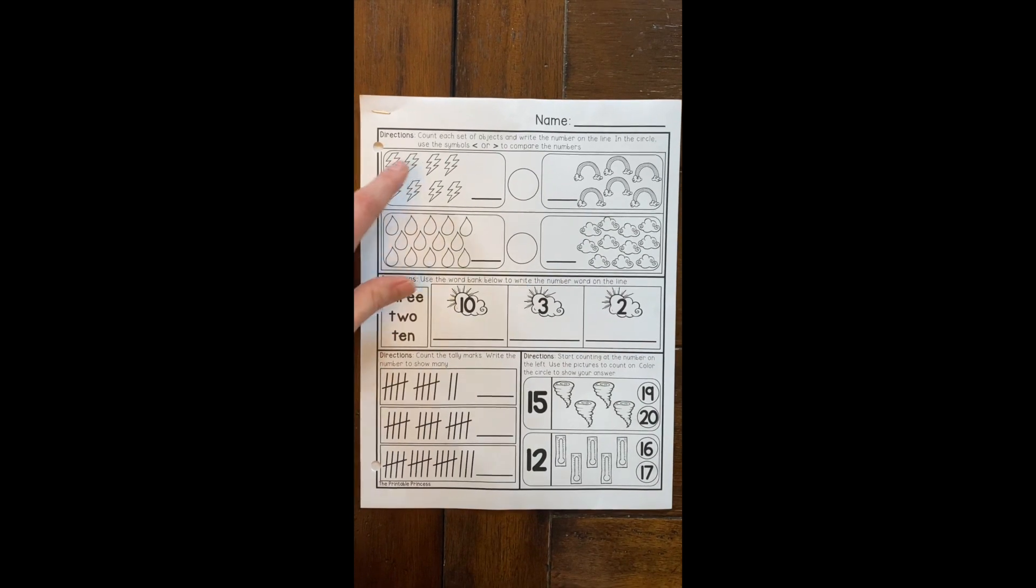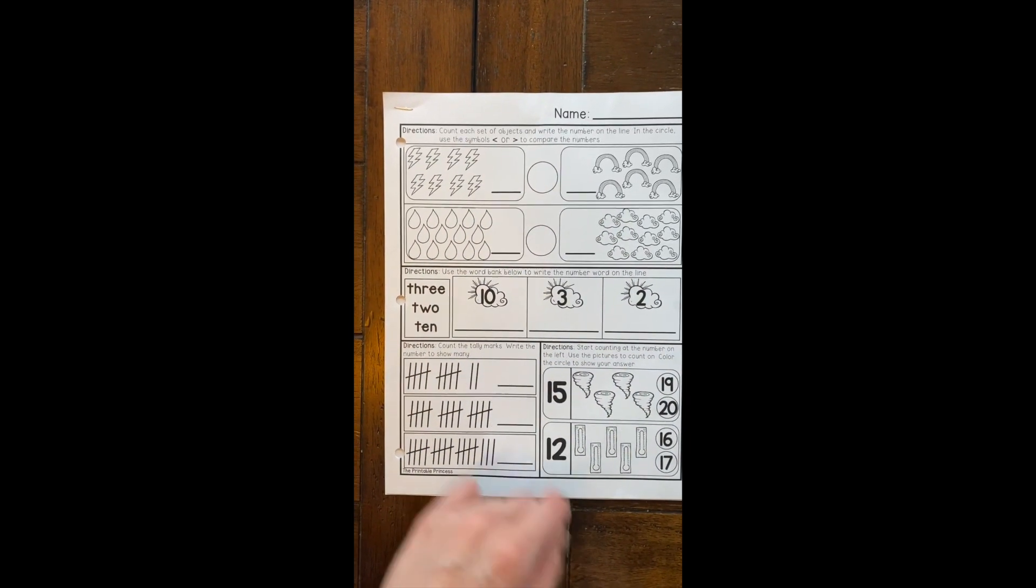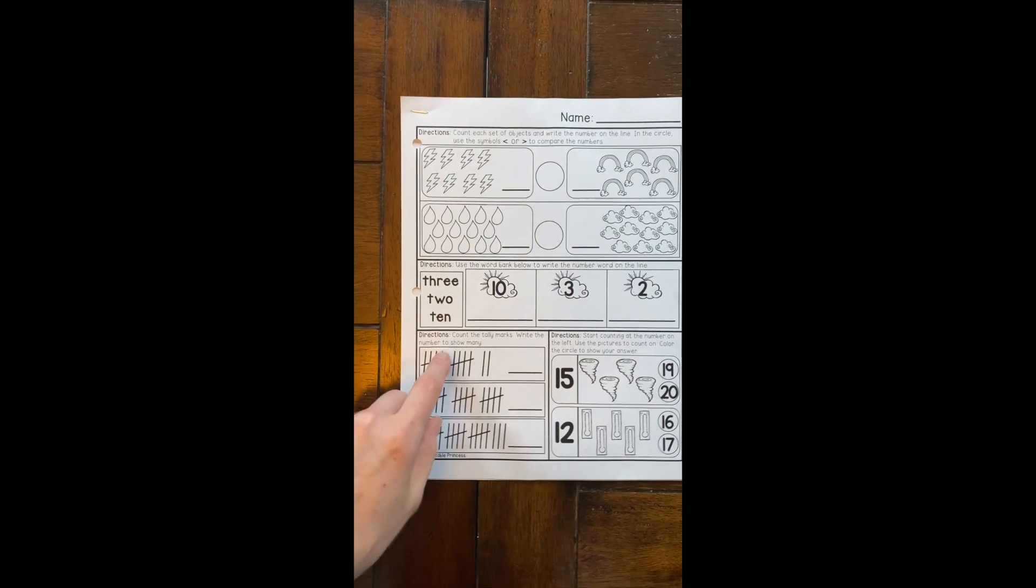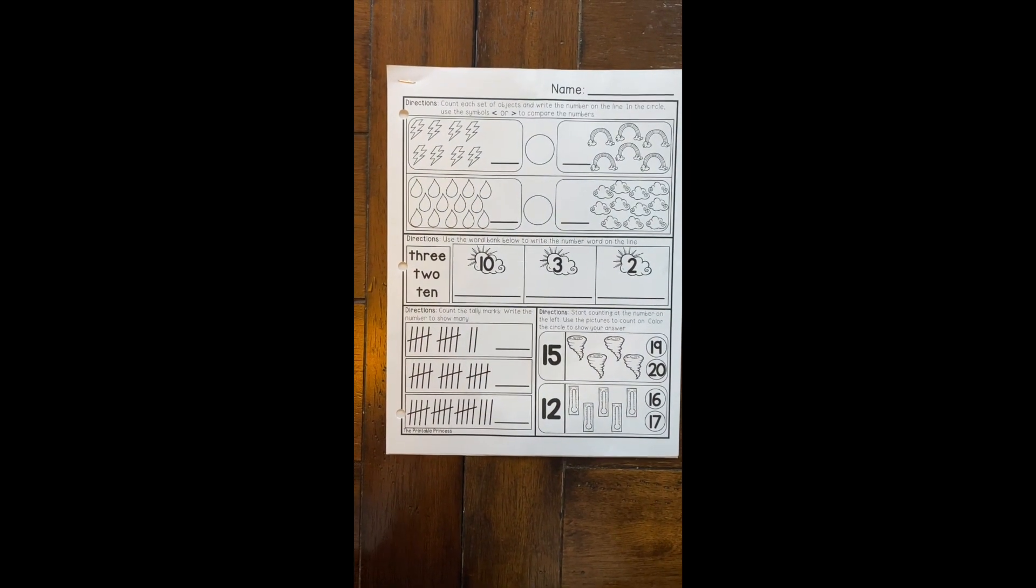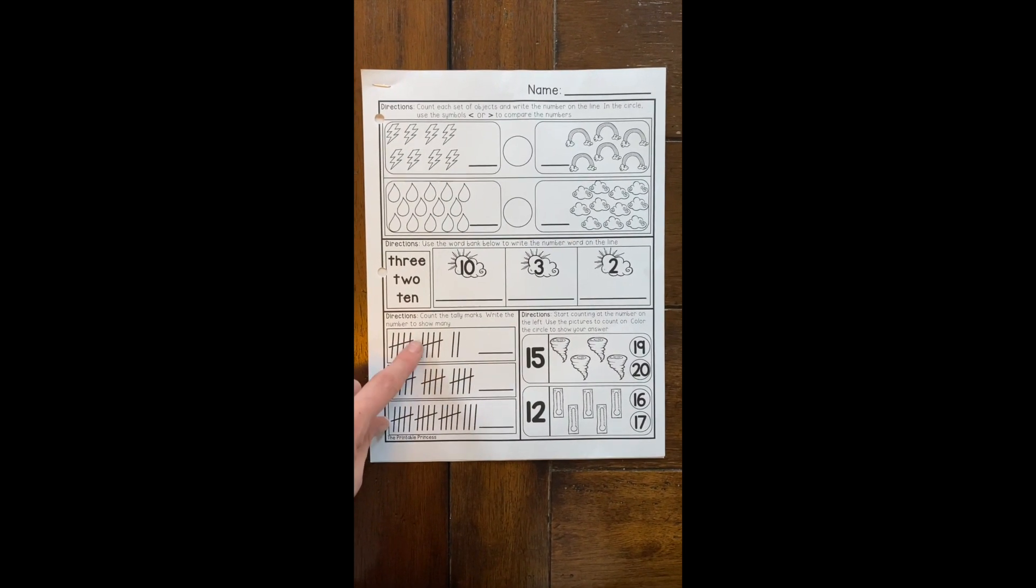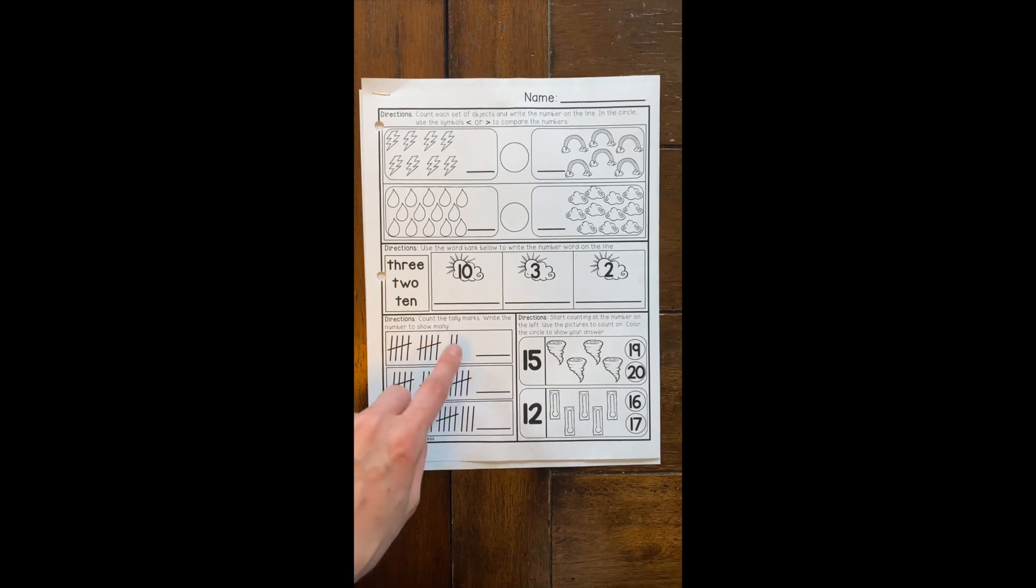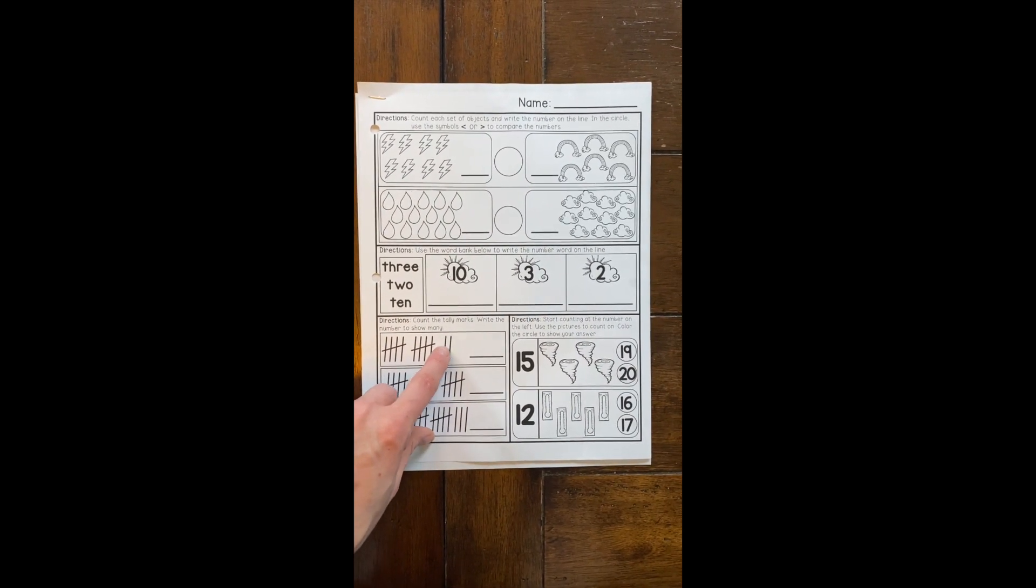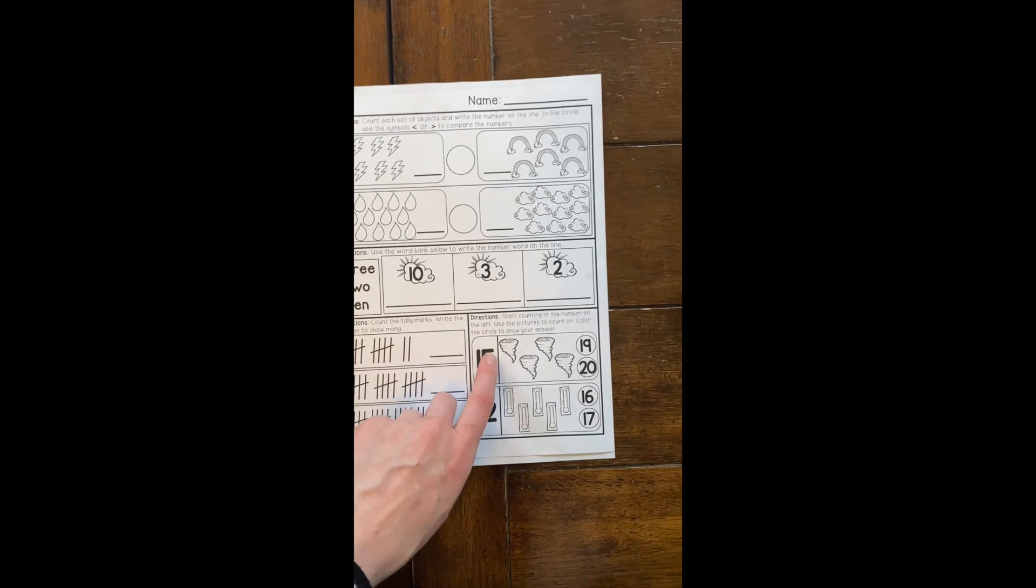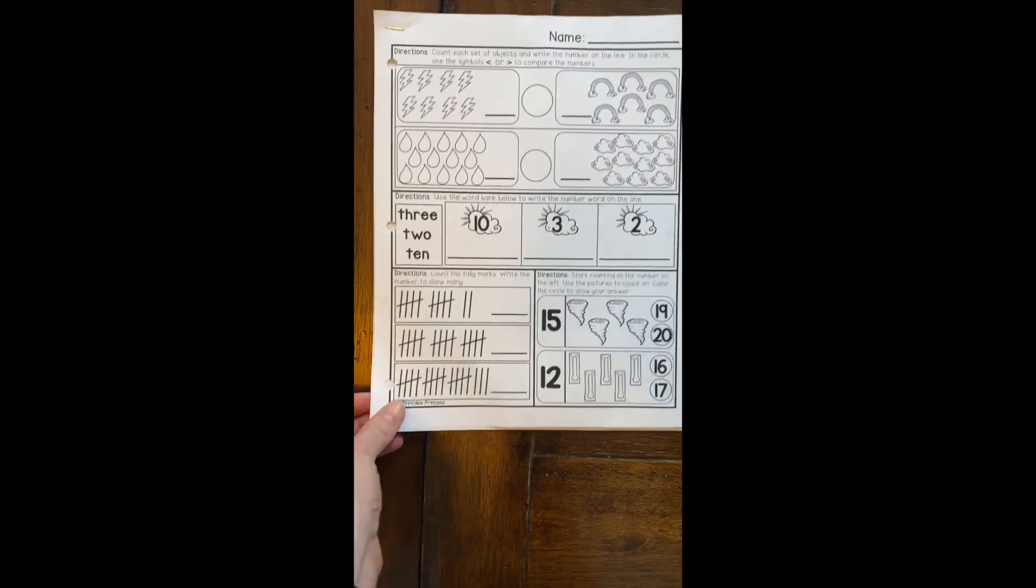Your morning work today begins the same way, where you're going to be counting and comparing your numbers with an alley alligator. Then down here, you're going to match your word to the number, and then you're going to be counting tally marks. Instead of counting each of these tally marks, you can count them as a group of five and go five, ten. Do we have another five here? Nope. So now we're going to have to count on from ten. So five, ten, eleven, twelve. See if you can do that for each of these boxes. I want to see if you guys can do that all on your own today.